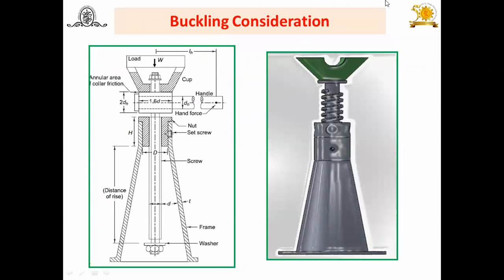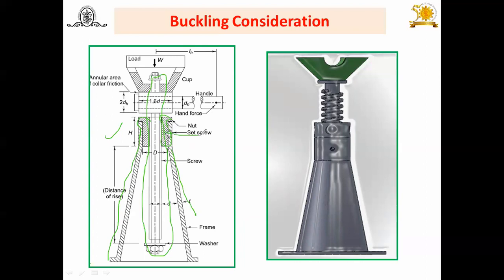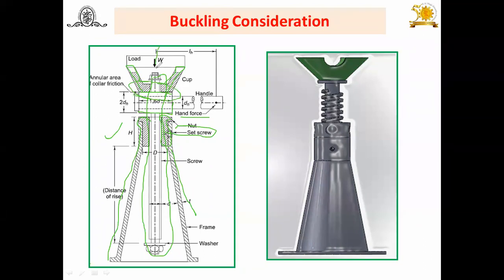In many applications — for example, in an IC engine the connecting rod length can cause buckling. In a screw jack, we find the screw, the nut, and a body part fitted with the nut using a set screw. A handle or tommy bar is used to rotate the screw, and there is a cup over the collar which supports the load. The main concern in buckling consideration is how much is the length of the screw.